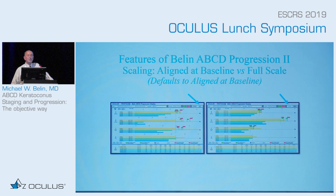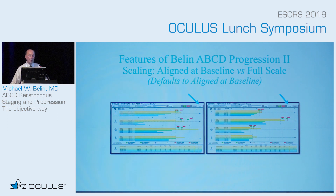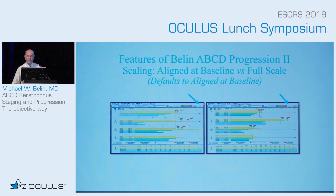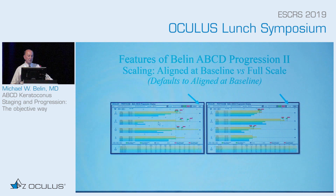There are two different ways of showing the data: aligned at baseline and full scale. It defaults to aligned at baseline, which is basically all you're ever really going to use. In aligned at baseline, the scales for each parameter are different, which maximizes the separation. Full scale keeps the scale the same throughout, so the gates are tighter. The limitation of aligned at baseline is that you lose the anatomical grading system, but it defaults to this because it's a progression display and makes determining progression easier.